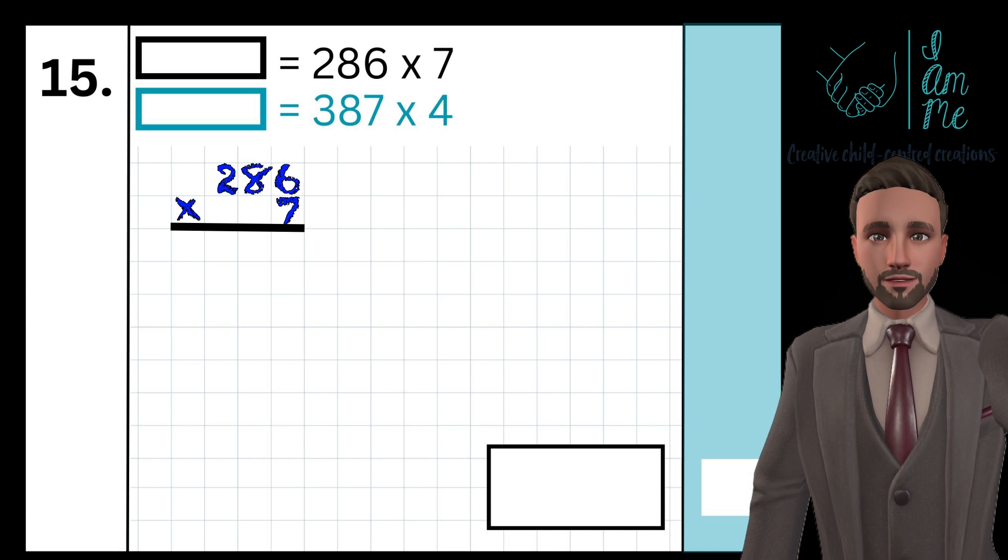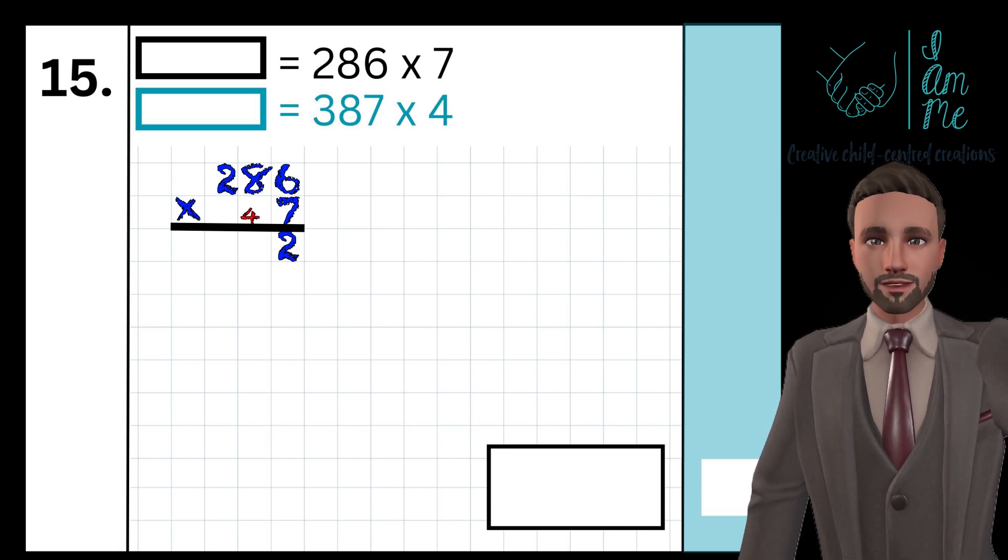So 6 multiplied by 7, the answer is 42. I carry the 4 and put the 2 beneath the line.